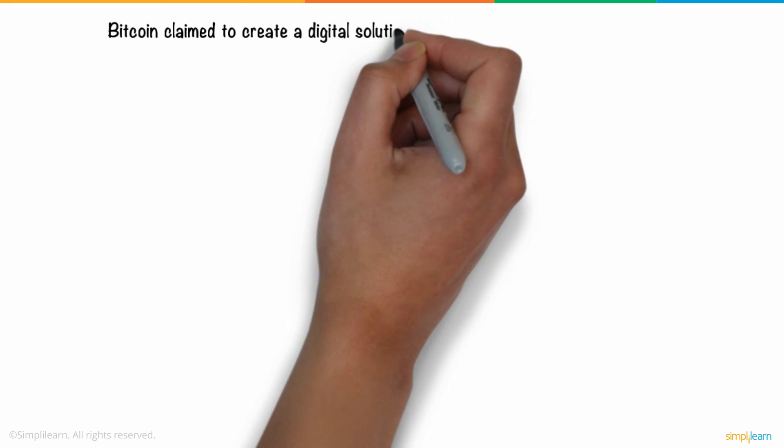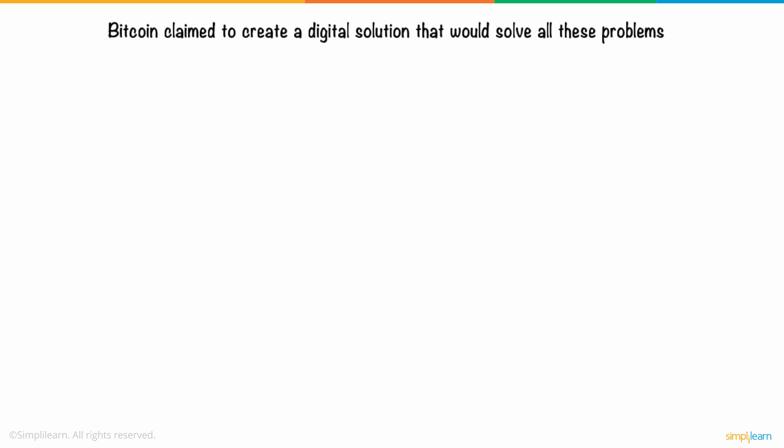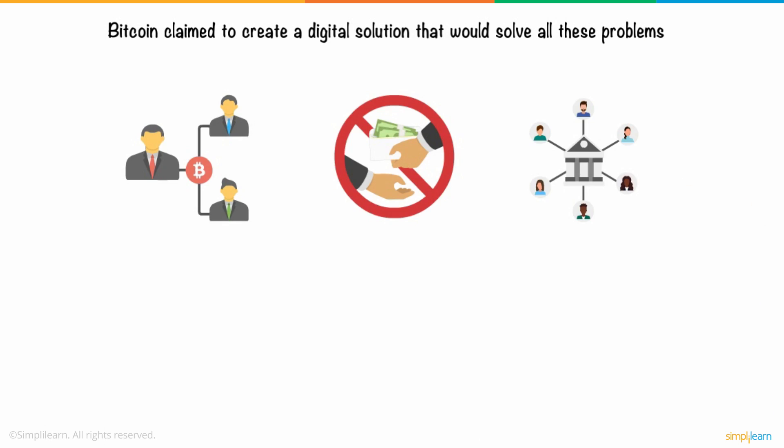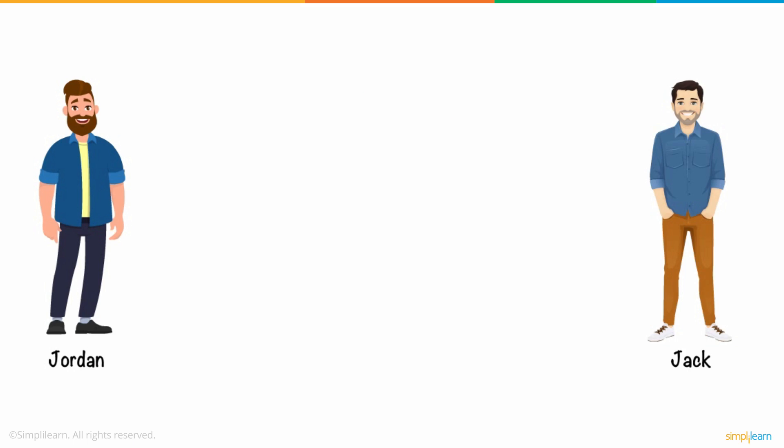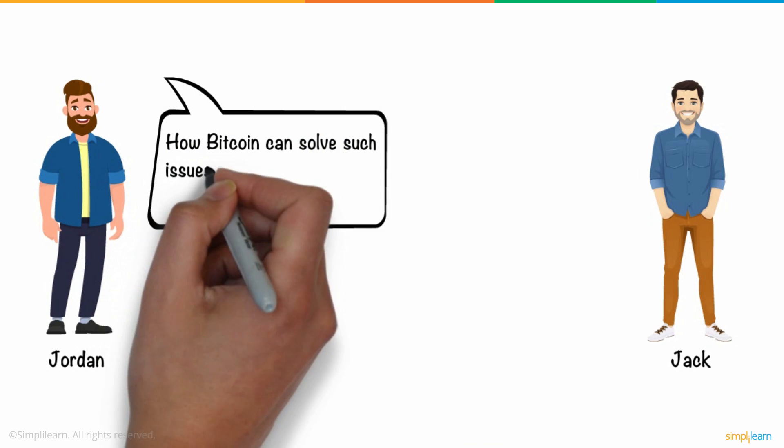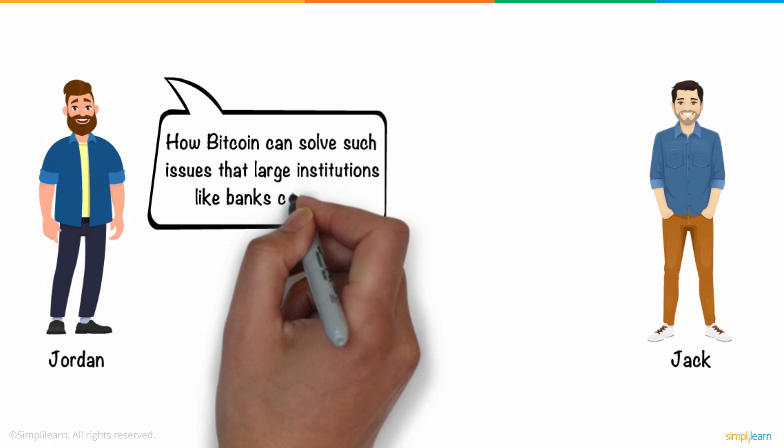Bitcoin claimed to create a digital solution that would solve all these problems, like double spending, corruption, and low transparency, without the need for a central authority. Jordan was excited to know about Bitcoin, but needed clarification about how Bitcoin can solve such issues that large institutions like banks cannot.